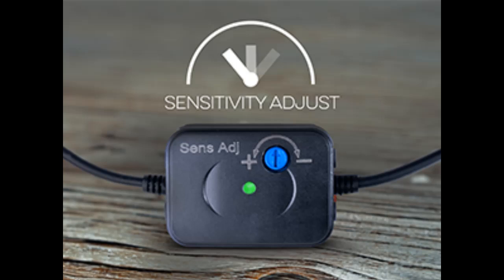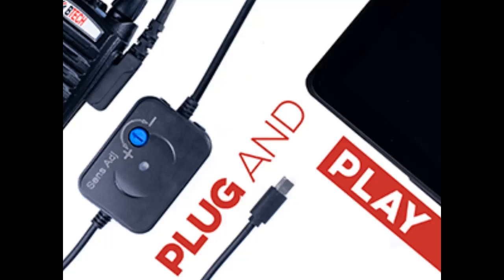Enhanced Audio Clarity: Equipped with a built-in custom circuit board, the APRS-K1 Pro ensures clear and reliable packet transmissions. It's engineered to prevent overmodulation, delivering high-quality audio for your communication needs.